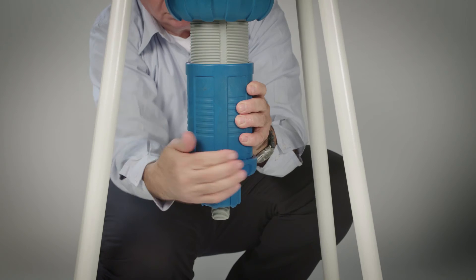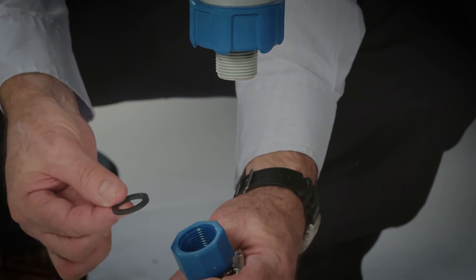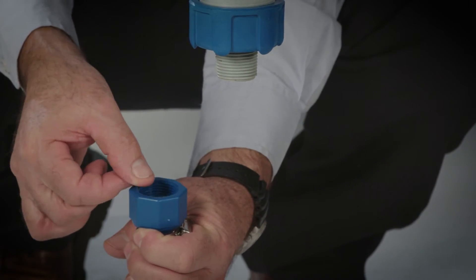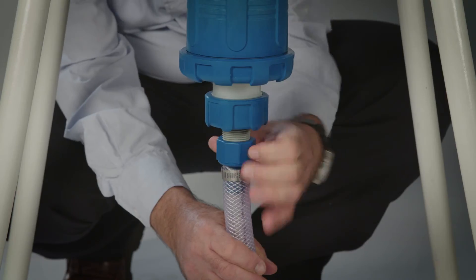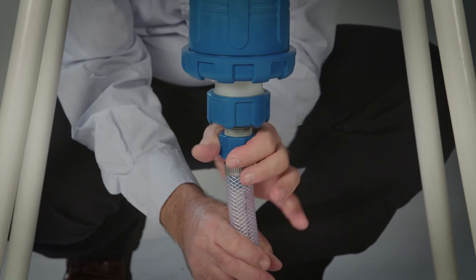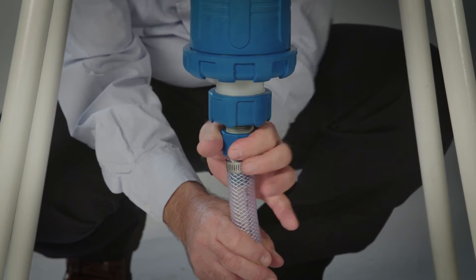Tighten the suction tube one-inch nut to the check valve inlet, assuring that the flat seal sits well. Securely tighten the nut to assure that no air will go in while fertilizer solution flows.